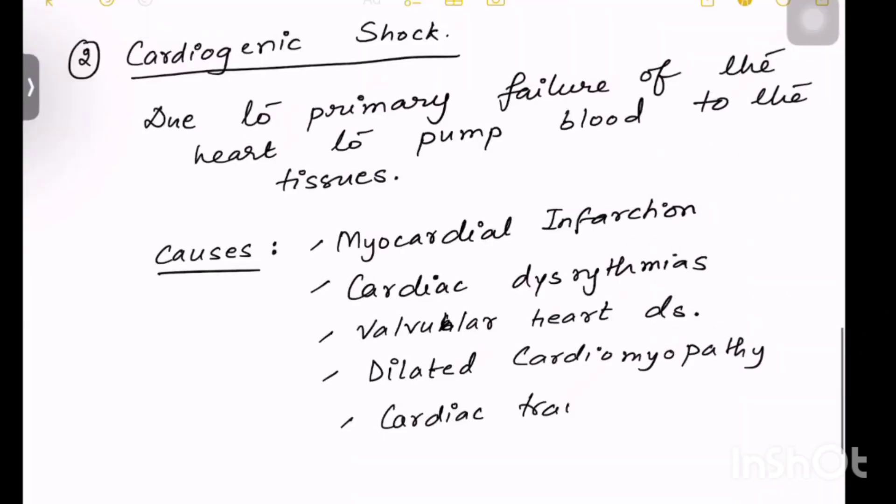Now the second type of shock is cardiogenic shock. Why is this occurring? This is occurring because of the primary failure of the heart to pump blood to the tissues. Naam se hi pata chal raha hai, cardiogenic matlab heart se related hoga, heart is unable to pump blood to the tissues. What are the causes? Myocardial infarction, cardiac dysrhythmias, valvular heart disease, dilated cardiomyopathy.